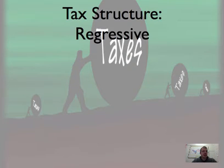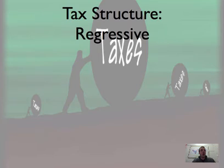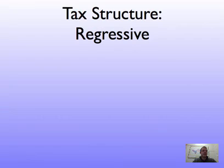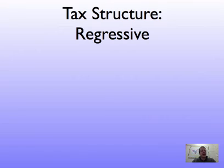The last type of tax structure we'll talk about is a Regressive Tax Structure. This takes a smaller share as income increases — a regressive tax structure takes a lower percentage of income as your income increases. Here's the thing about regressive tax structures: they are not intentional, they are not designed to work that way. But a tax is regressive when it takes a larger percent from the poor than from the wealthy.